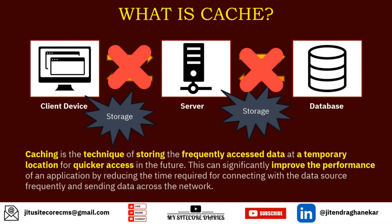How do you define caching? Caching is a technique of storing frequently accessed data — remember, the storage is for frequently accessed data; if that data is dynamic, you cannot store it in the cache. So caching is a technique of storing frequently accessed data at a temporary location for quicker access in the future. This can significantly improve application performance by reducing the time required to connect with the data source and send data across the network.